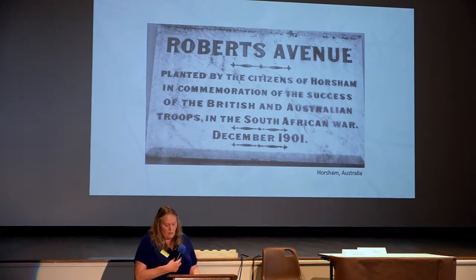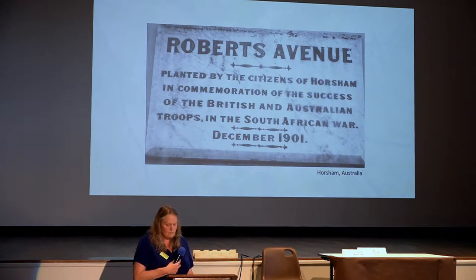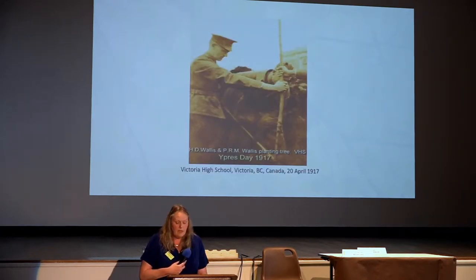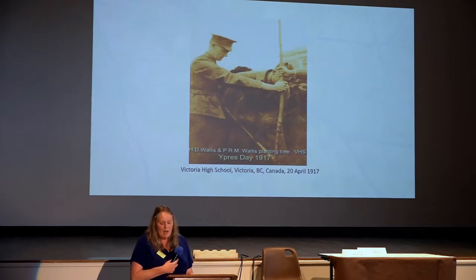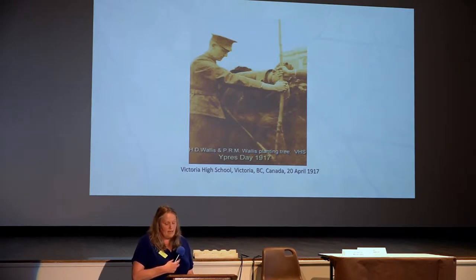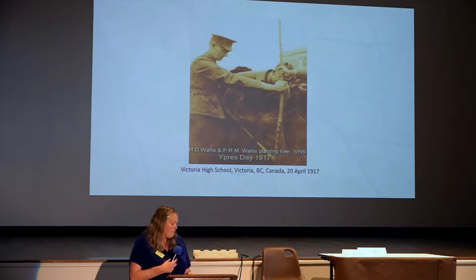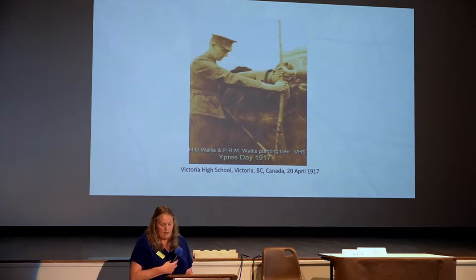One of the schools taking part was Bendigo East Primary School, which made an initial planting of 16 native trees in their small avenue. Trees were planted at Victoria High School, Victoria BC, Canada, on 20th April 1917 for the teachers and students who had died — a month before the Ballarat Avenue of Honour idea was presented for consideration. Ballarat seems to have been the launching post for many other avenues.